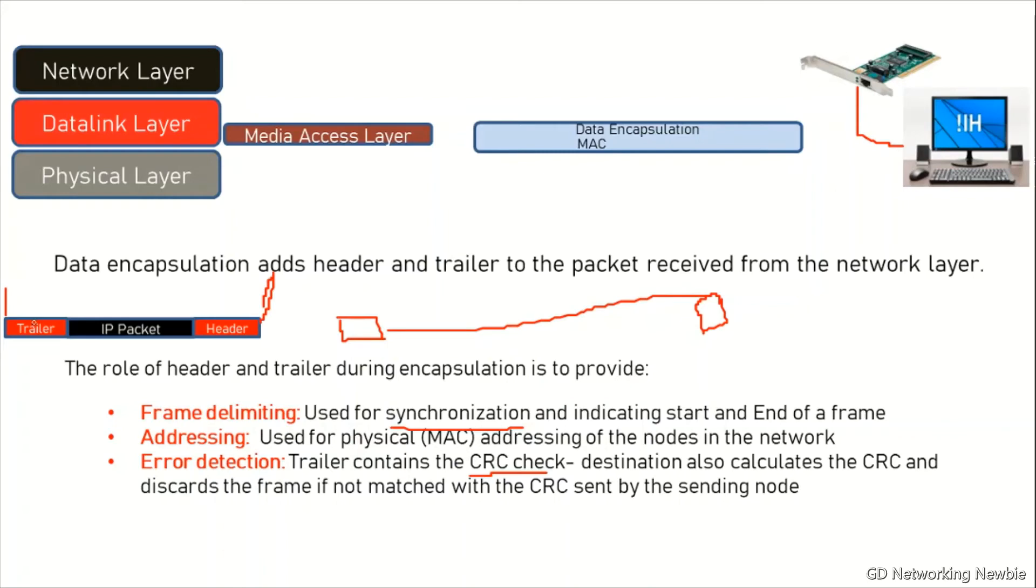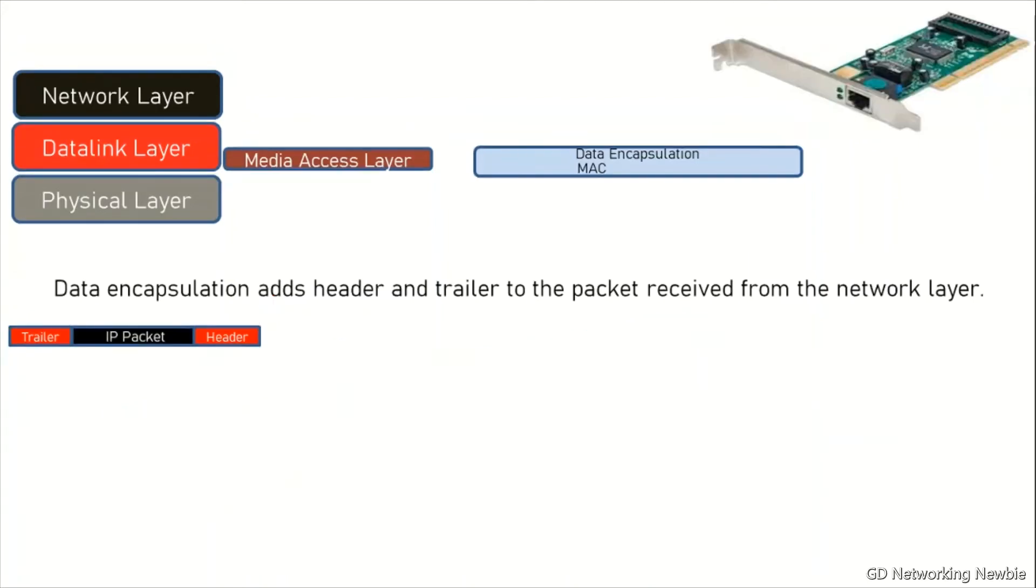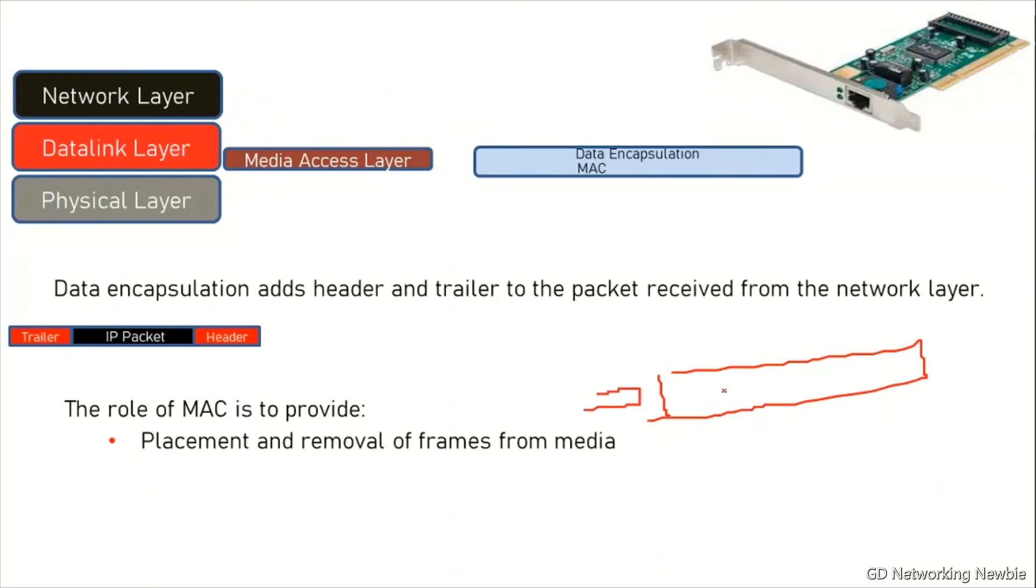After discussing data encapsulation, we can discuss the role of media access control, the MAC part of this media access layer. The job of MAC is to provide the placement and removal of frames from the media. For example, we have this media - coaxial cable or UTP - how to place the frames onto that media and how to remove the frames from media.